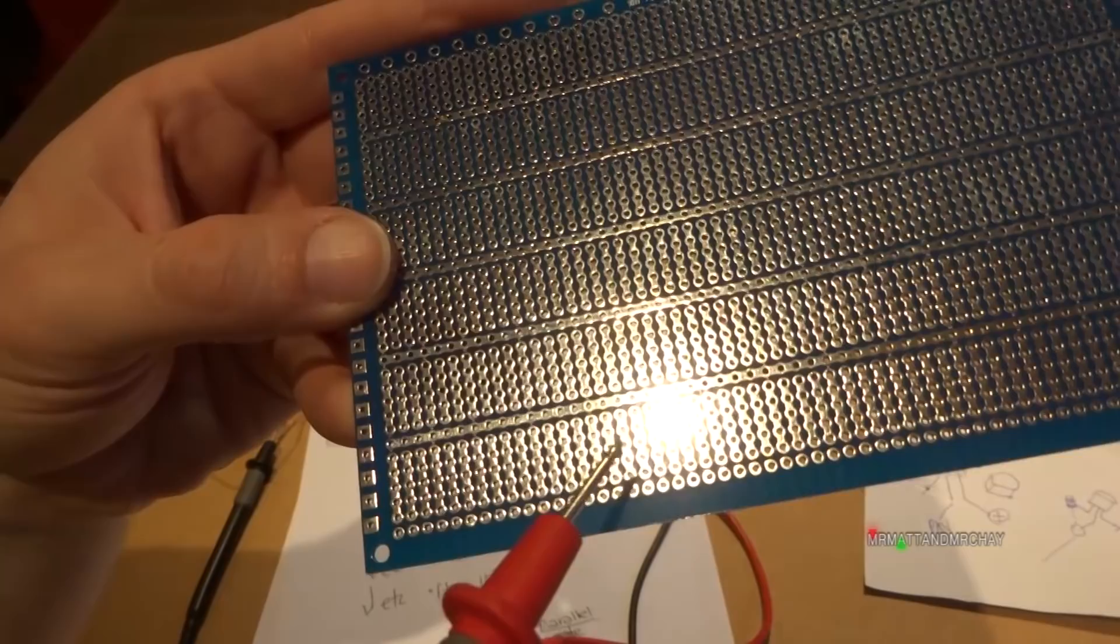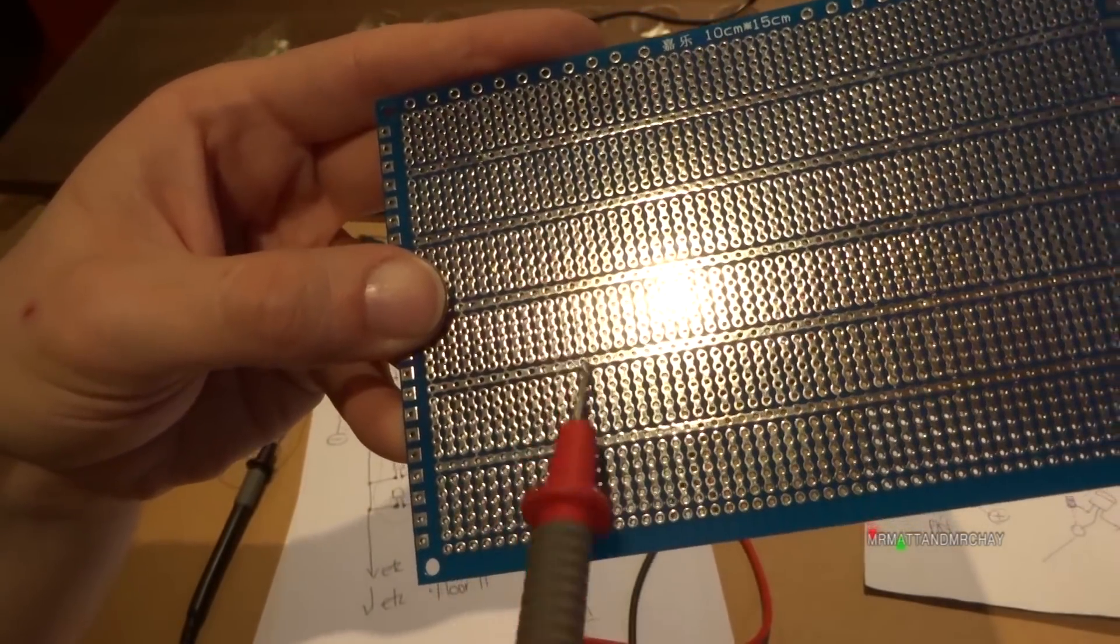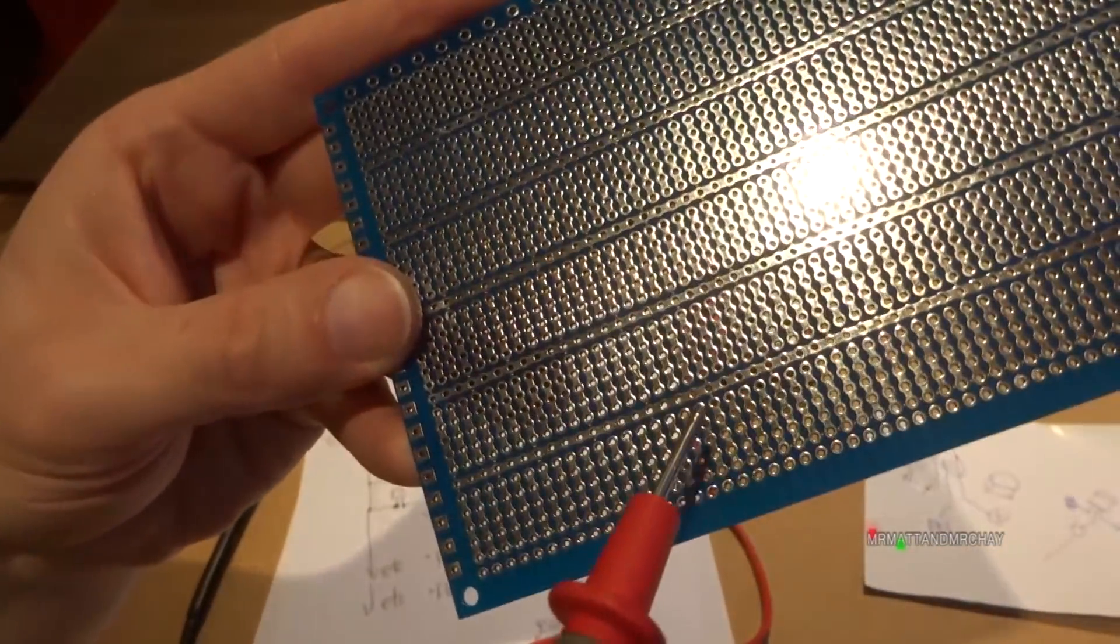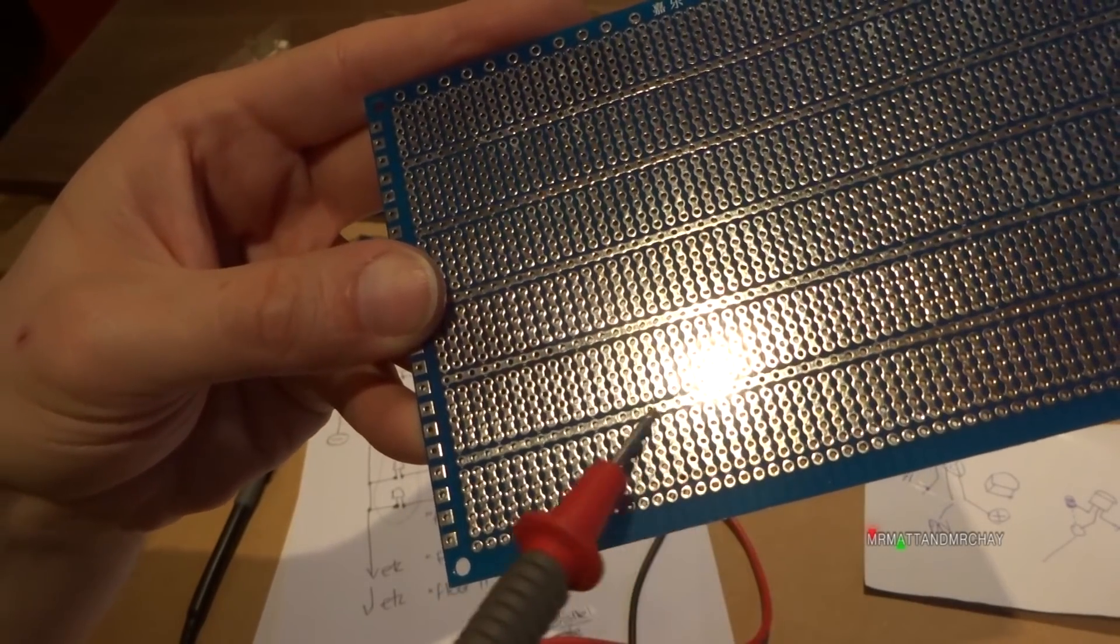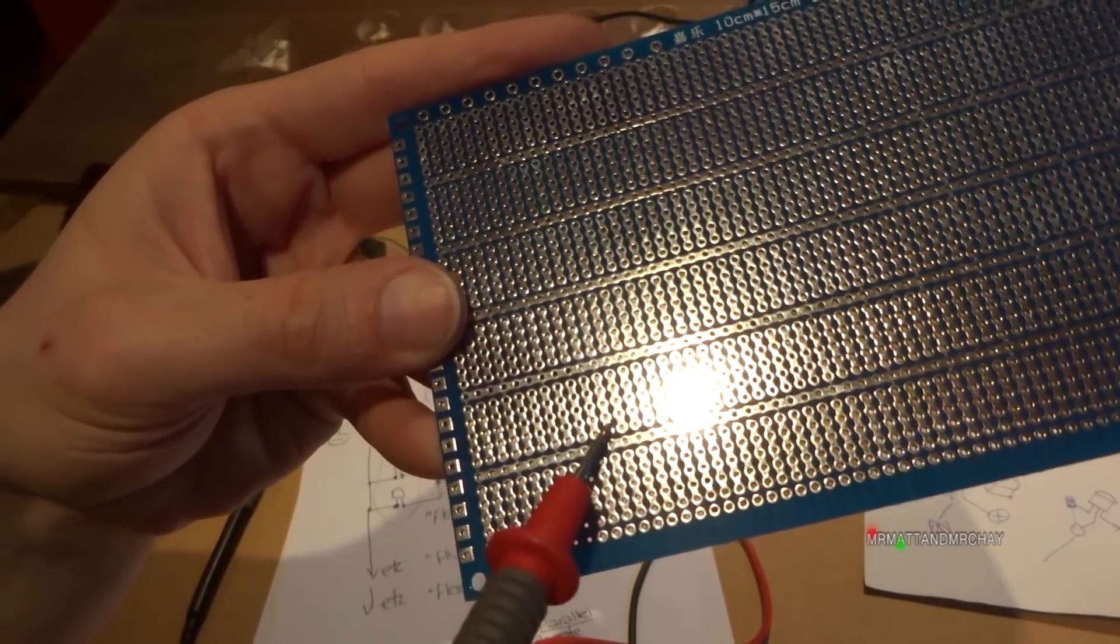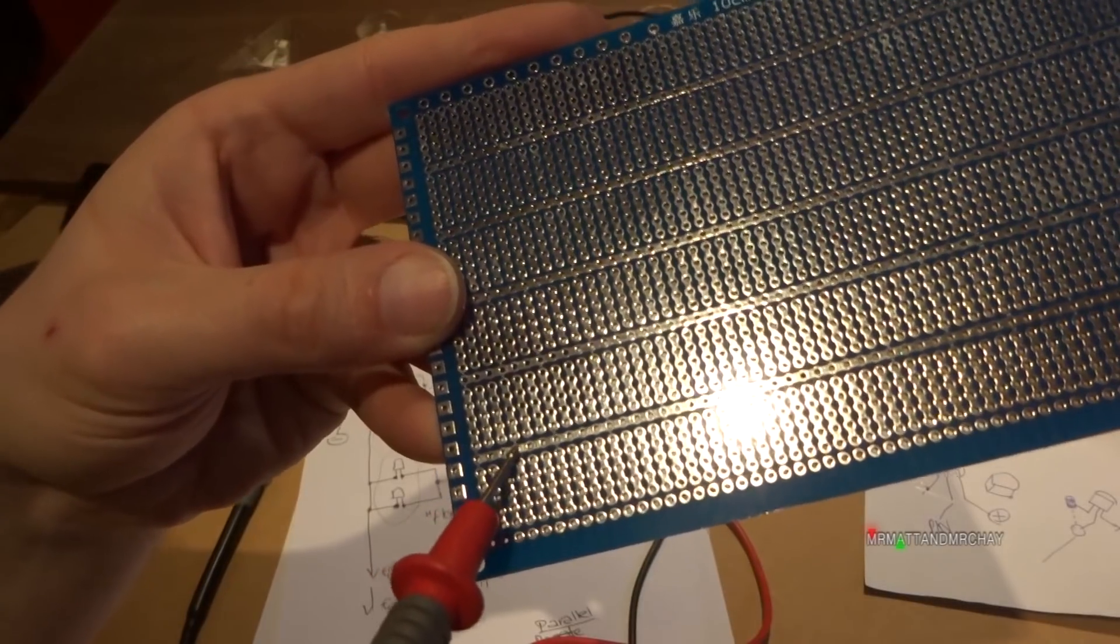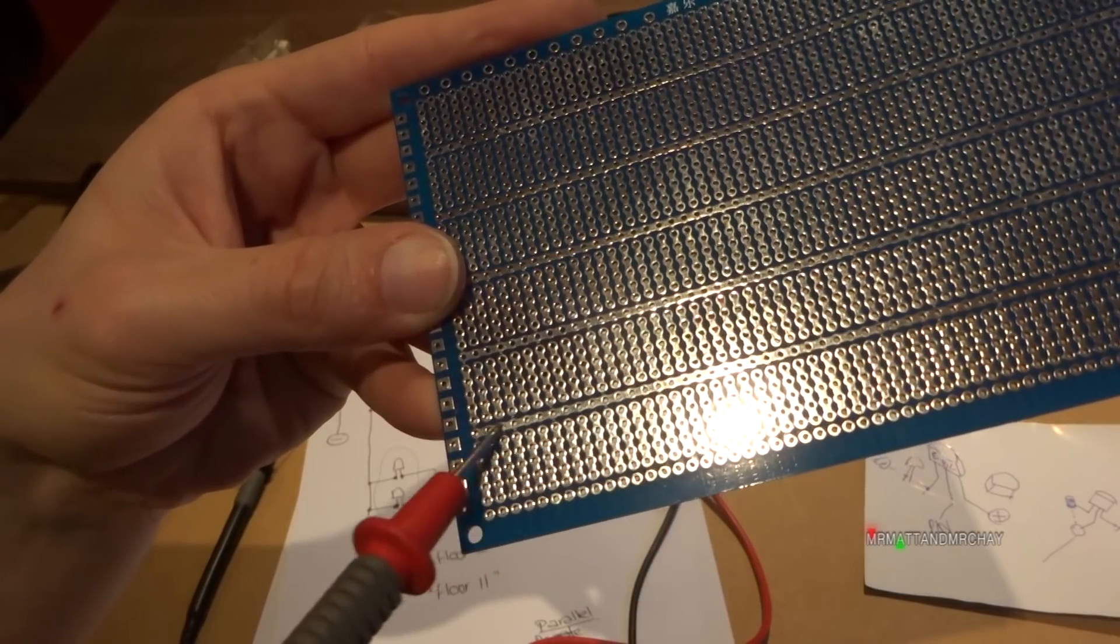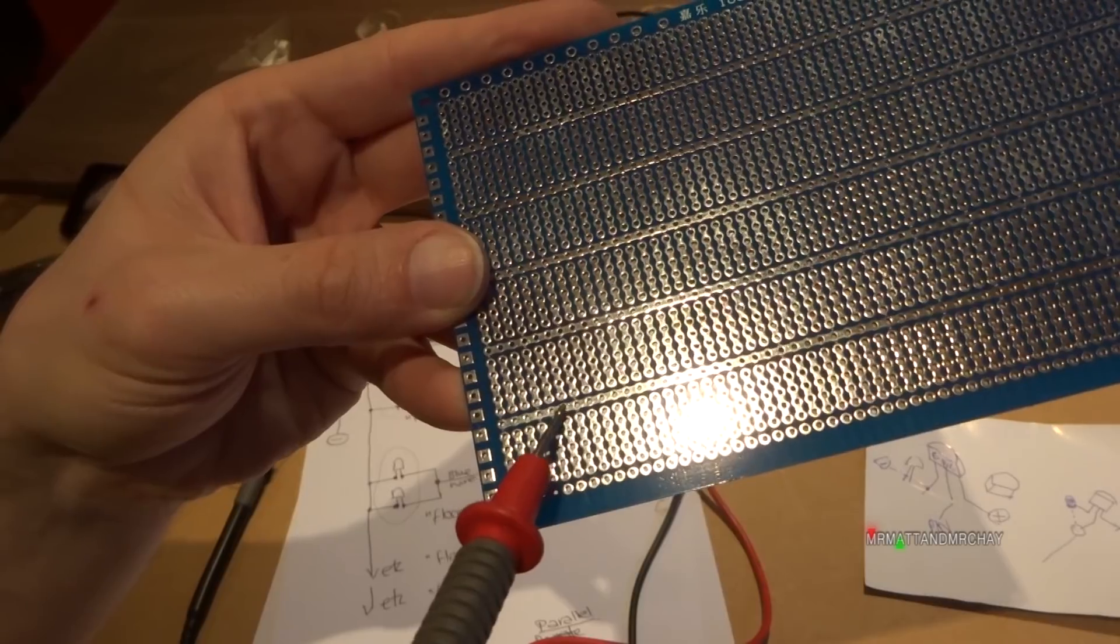Now I could have just ordered what's called veroboard, which has tracks going vertically only. But I've ordered this one, I found this one on the internet, because this has an unusual horizontal track going all the way along there, and then it has sections of vertical tracks. So this is ideal for what I want it for, because what I can do is I can put the five volts going along this track here and then the individual transistors for the floors can then come off of this track onto these ones.